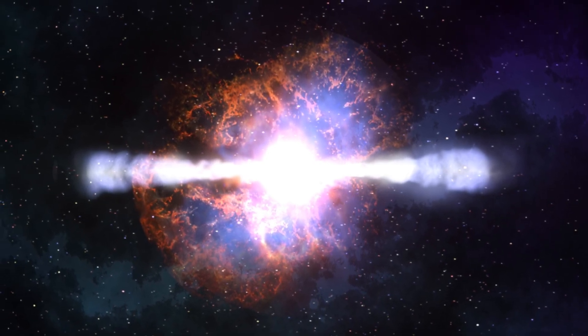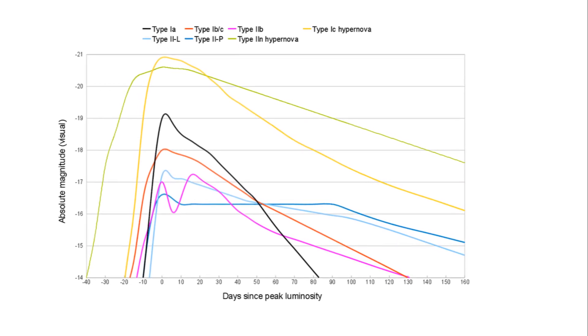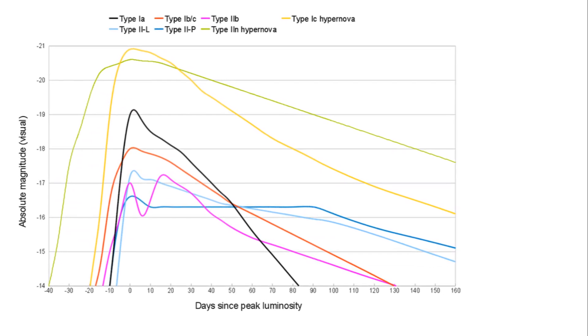So, what makes a hypernova different? A key characteristic of a hypernova is its energy output. While a typical supernova can release energy equivalent to the entire sun's lifetime in a matter of seconds, a hypernova releases vastly more, up to 100 times more energy than a supernova.